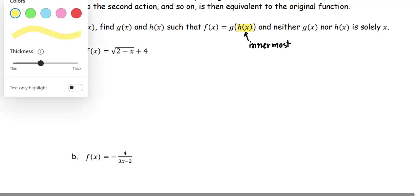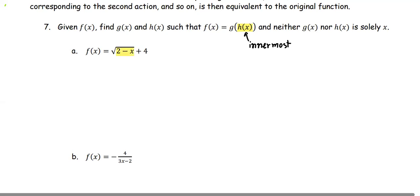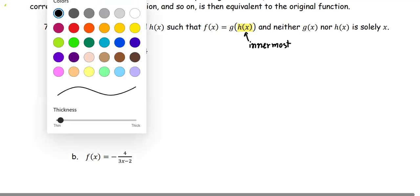In part a, we have the square root of 2 minus x plus 4. The innermost would be 2 minus x. So make a list here.